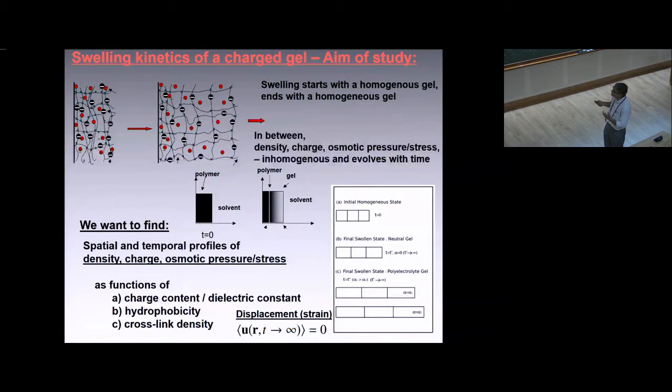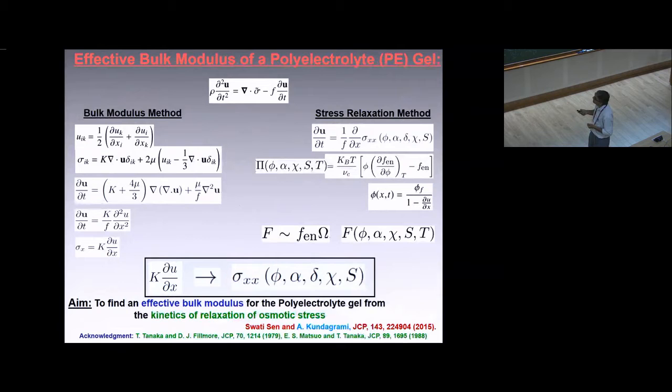What we have done here is looking at the kinetics of such gels. You start from a non-equilibrium shrunken gel at high density, let it swell to its swollen equilibrium at low density. It swells non-uniformly because water penetrates from outside, so the outside region swells earlier and reaches equilibrium density. We look at spatial and temporal profiles of density, charge, and osmotic pressure as functions of charge content alpha, hydrophobicity, chemical mismatch, and crosslink density.